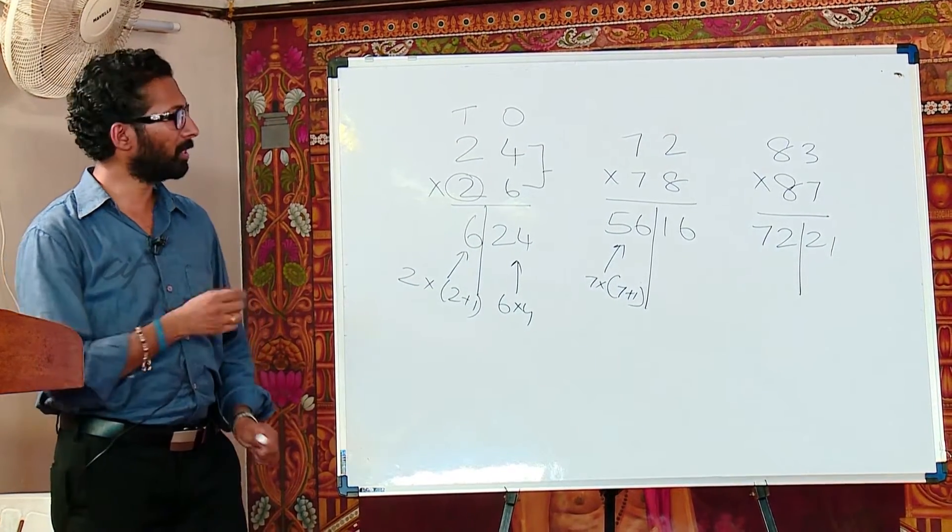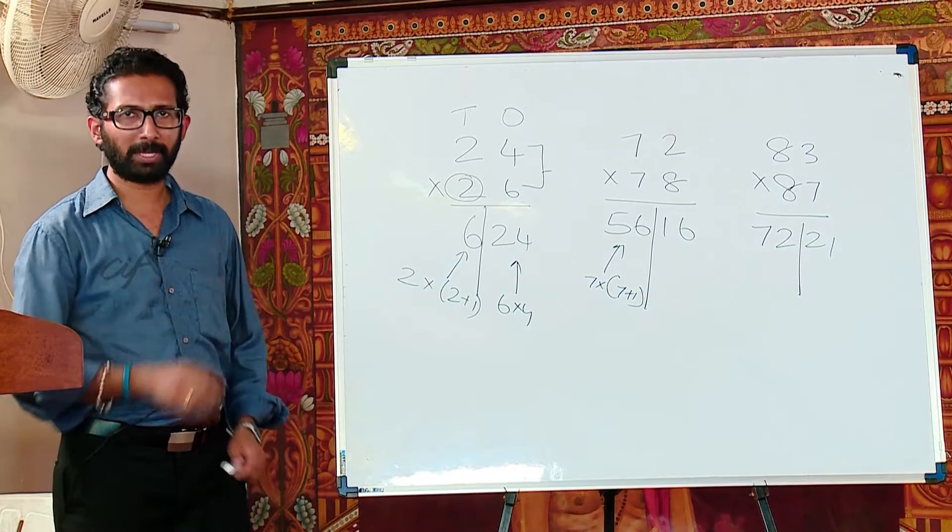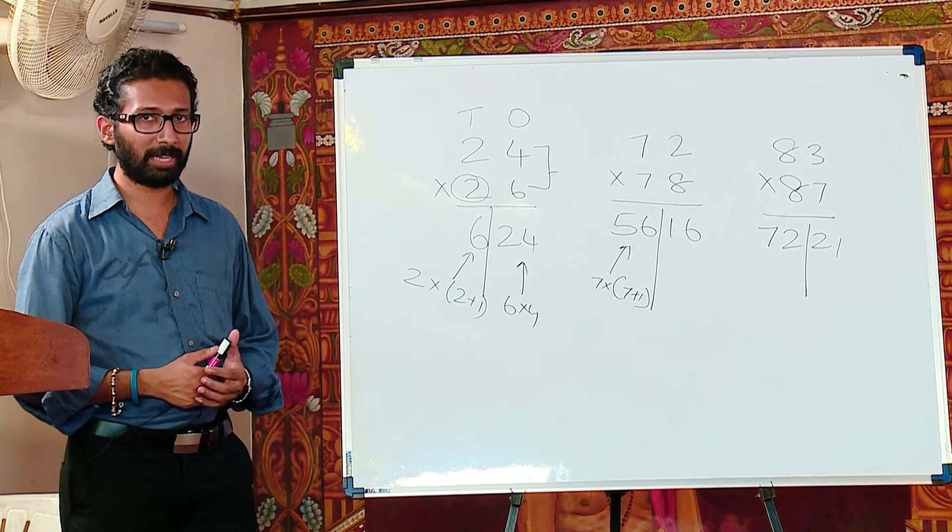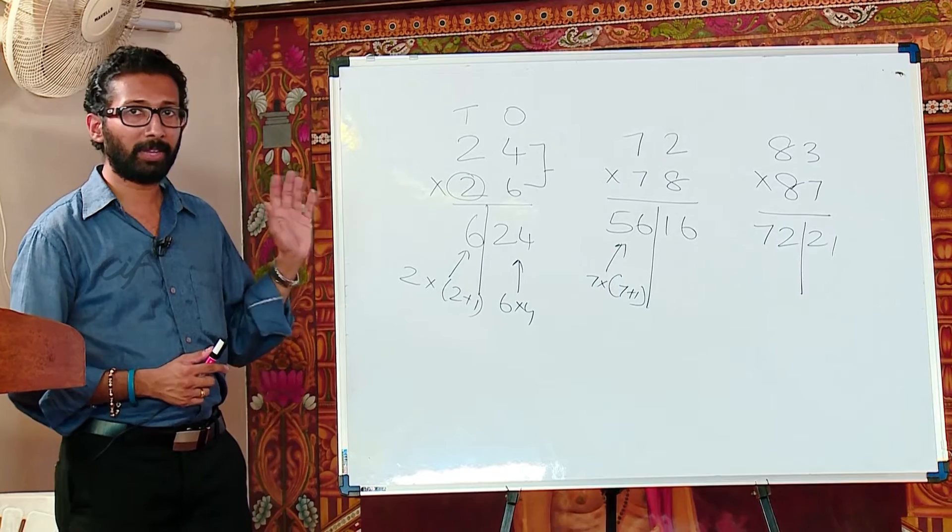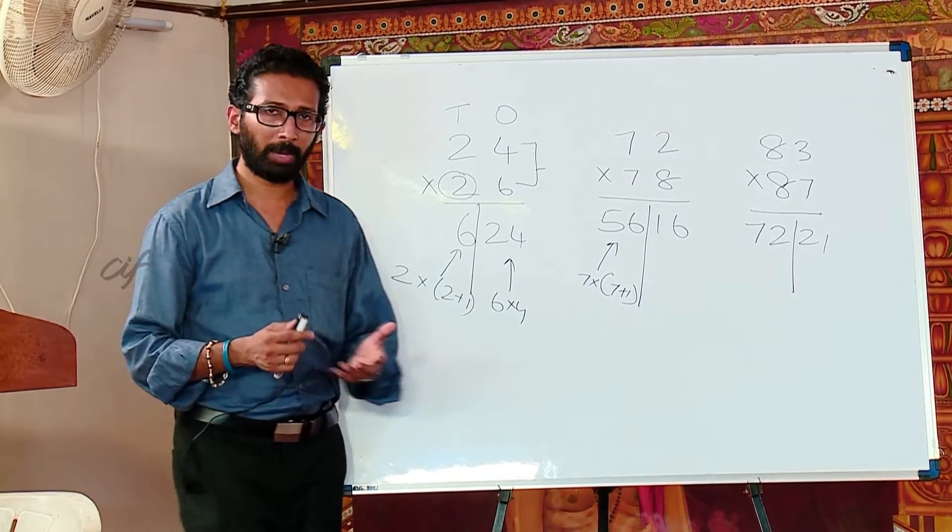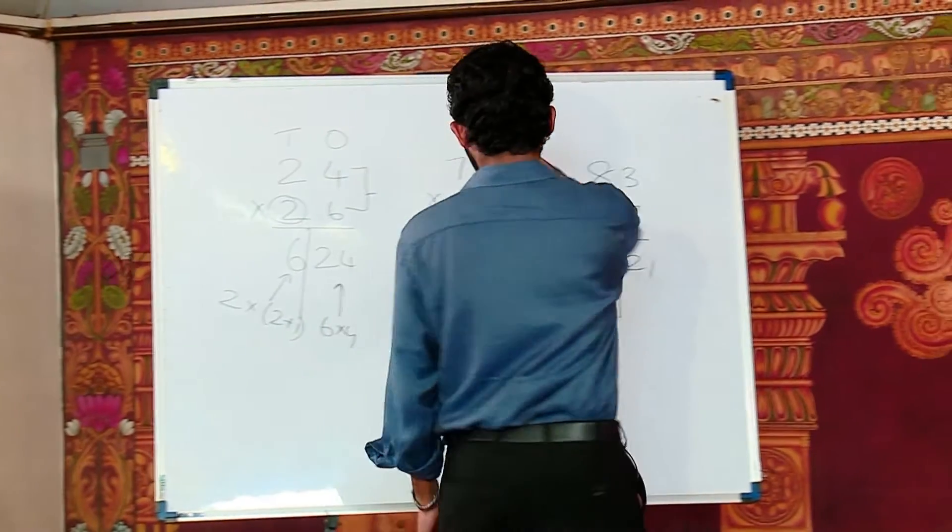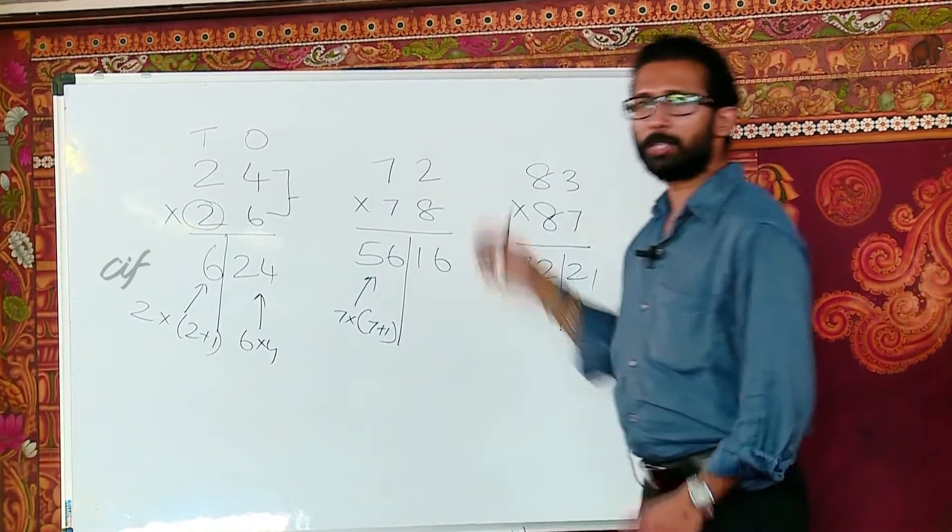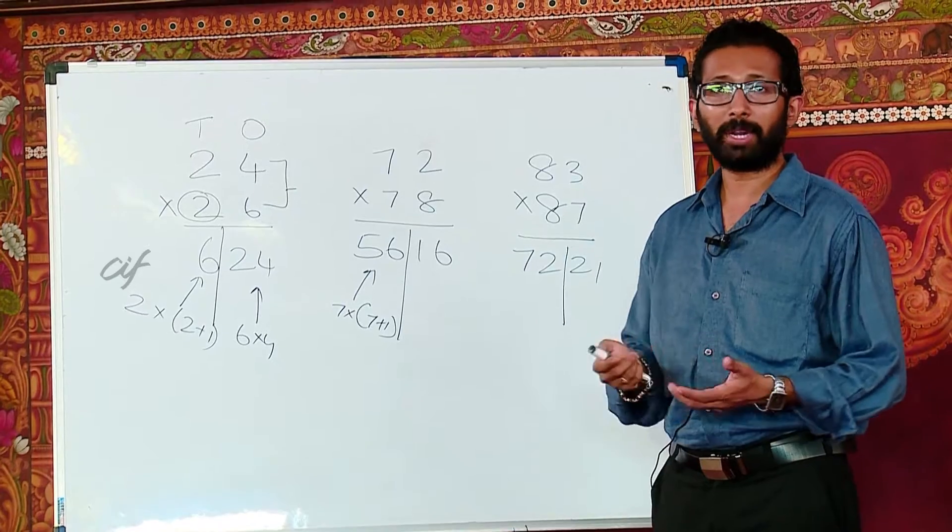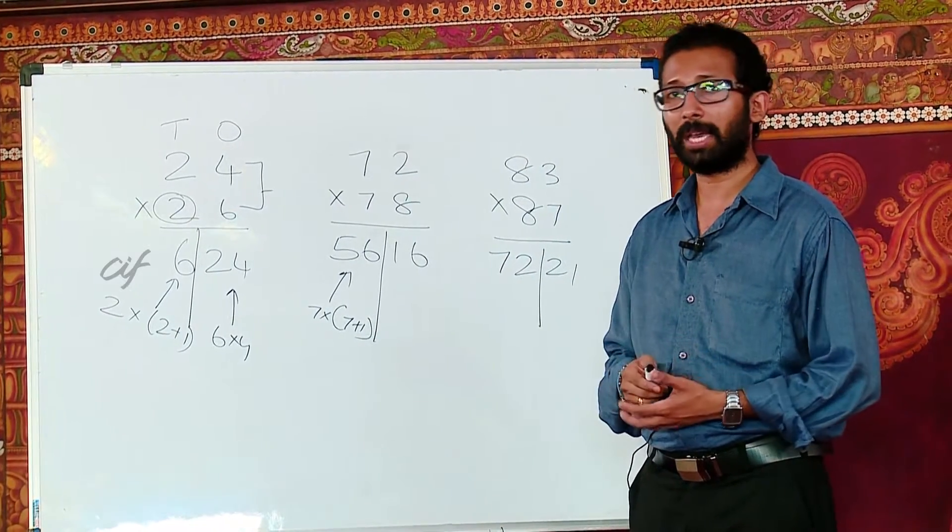So just try to do the same thing in the conventional method. You will see that how much time you are really saving. Now, this is one technique in Vedic mathematics. Now, one might think, okay, this technique is very useful when the tens place digits are the same and the units place digits add up to 10. But what if I do not get a question like that? I have to do some other calculation.